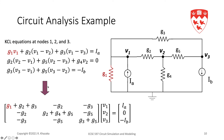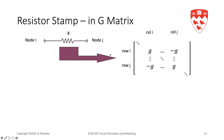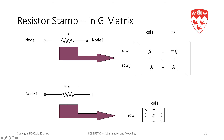We can now generalize: for a resistor between node i and node j, its contribution to the G matrix is G, −G, −G, G in rows i and j, columns i and j. If the resistor is connected between node i and ground, it appears only on the diagonal at row i, column i. All of these entries go into the G matrix.